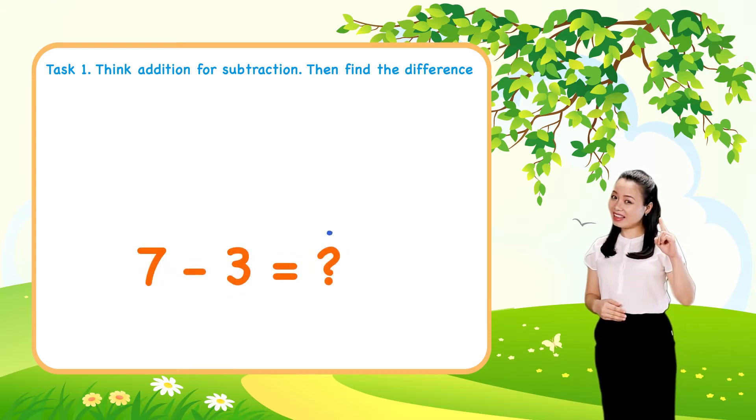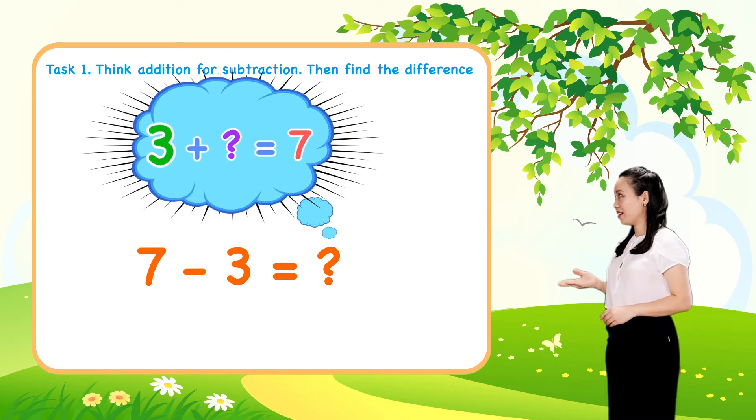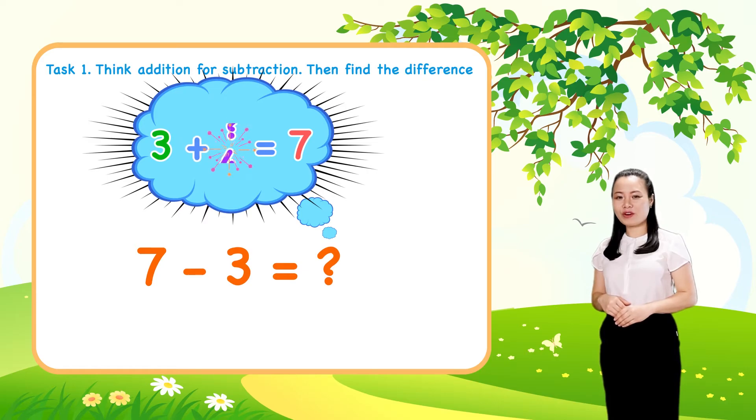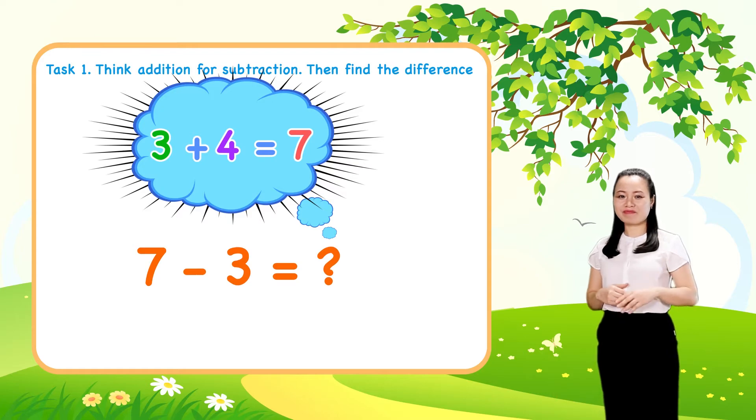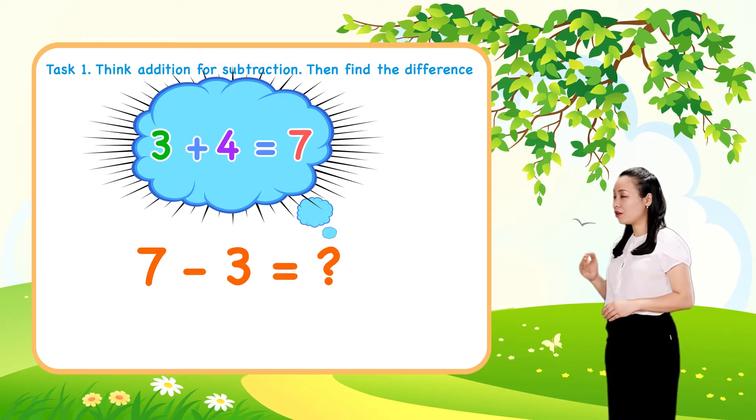Next, think 3 plus 4 equals 7. So 7 minus 3 equals 4.